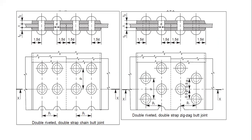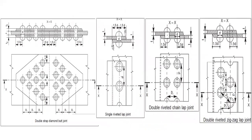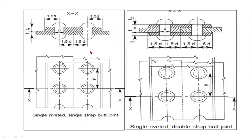A single riveted joint is that in which there is a single row of rivets in a lap joint, and a single row of rivets on each side in a butt joint.